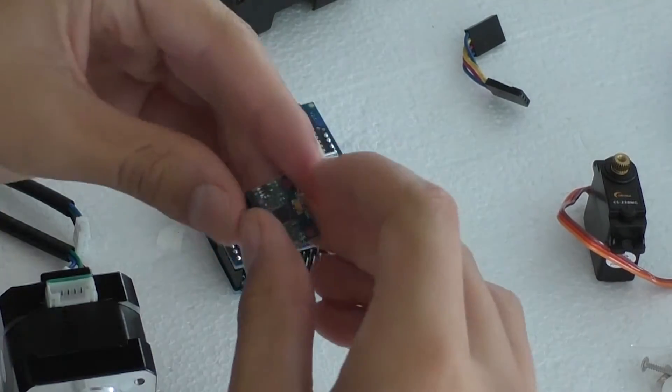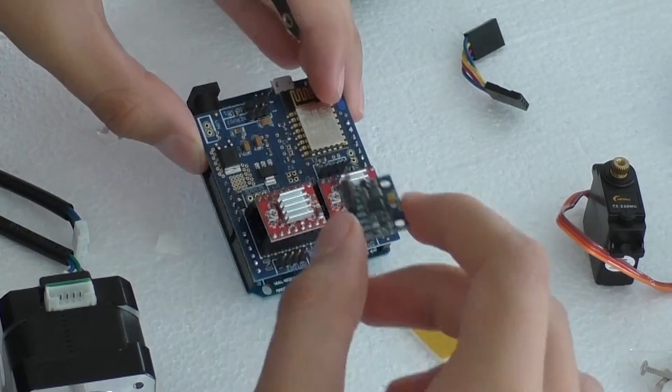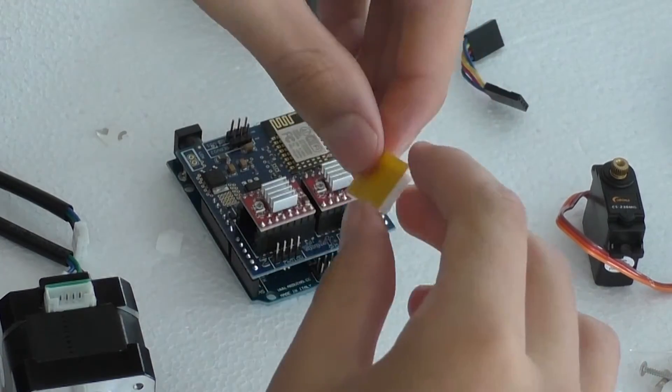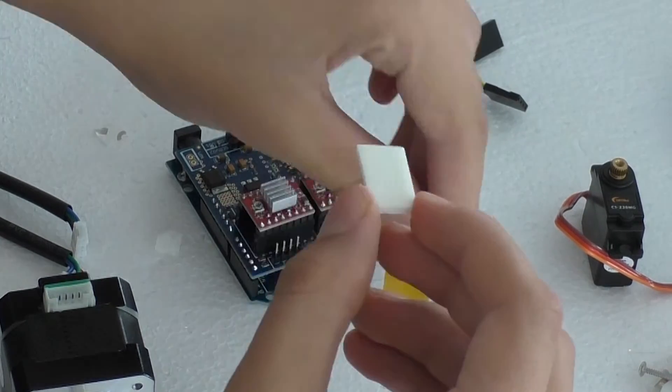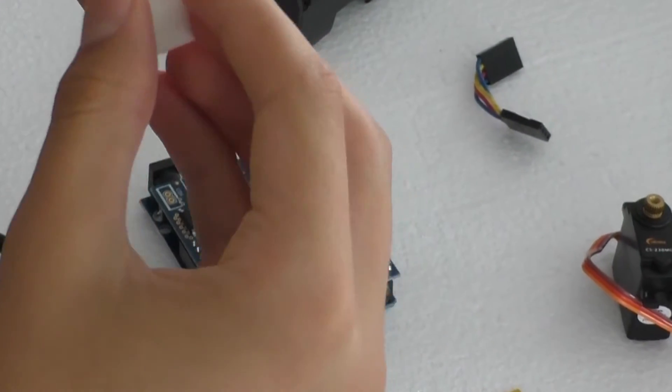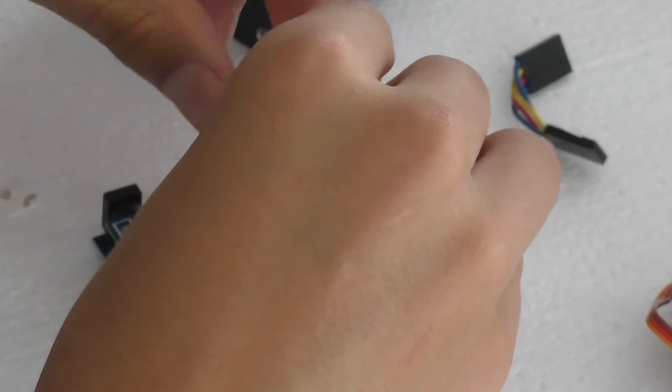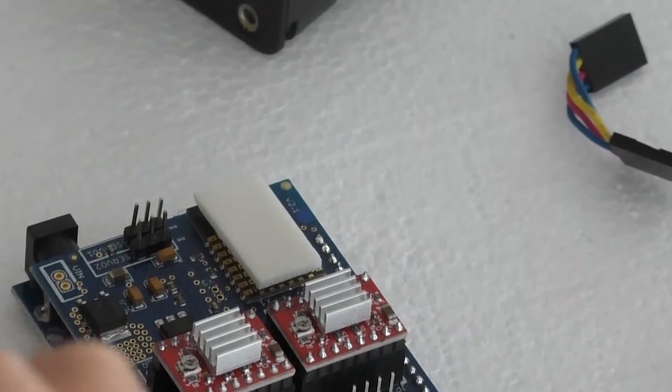Now, we're going to attach the sensor with the accelerometer and the gyro to the WiFi chip. Get the piece of double sided tape. Peel off both sides. Then, stick it to the WiFi chip.